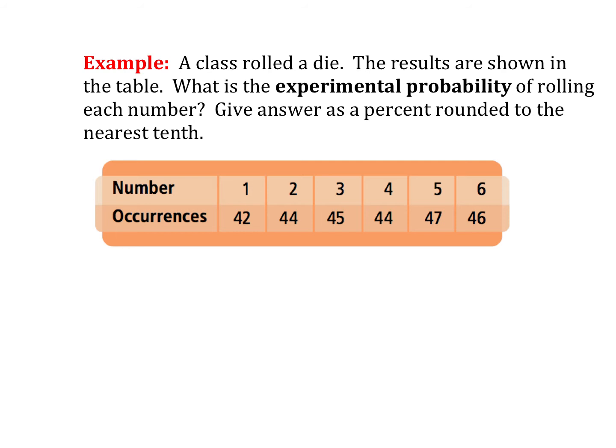Next up, we have a class rolling a six-sided die. What is the experimental probability of rolling each number? Now, in theory, each number would be equally likely. So each number should have a 1 out of 6 chance, in theory. Obviously, that's not what happened because certain numbers showed up more frequently than others. Well, first thing we should do is figure out how many total rolls we had. So all we're going to do there is just add together 42, 44, 45, 44, 47, and 46. We're going to have 230 total trials.